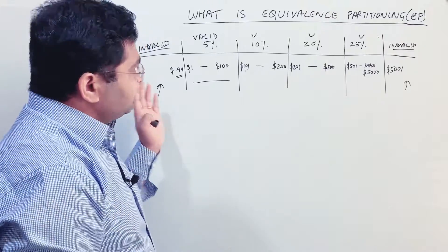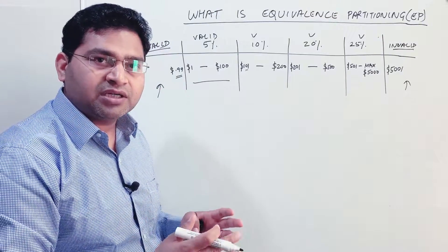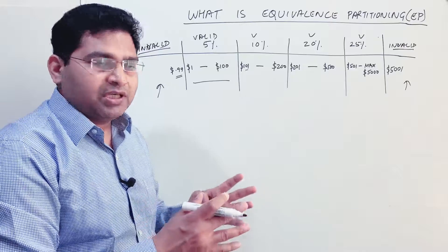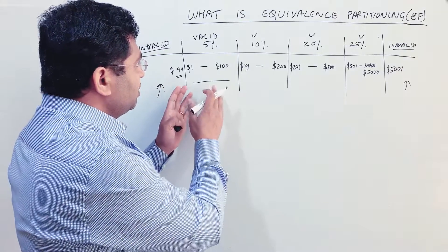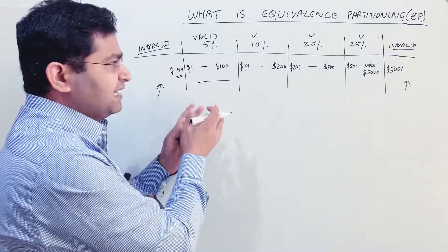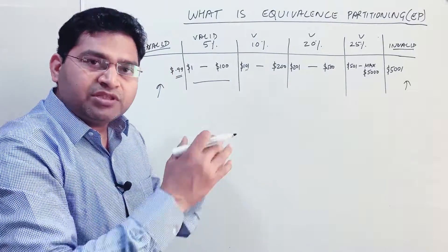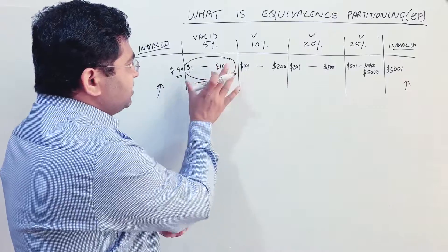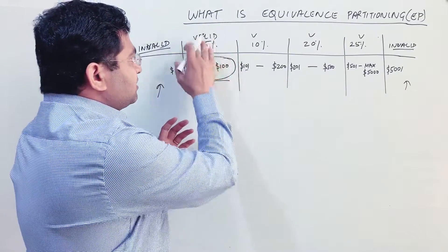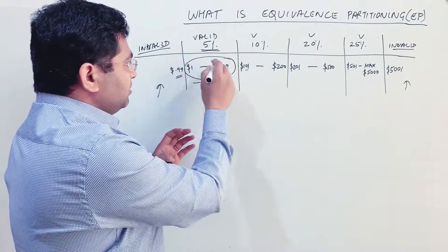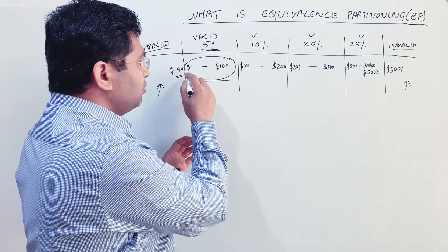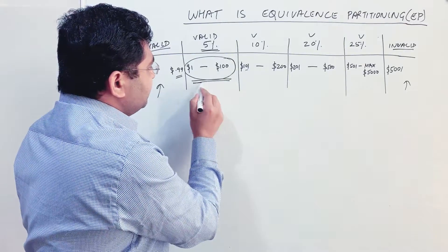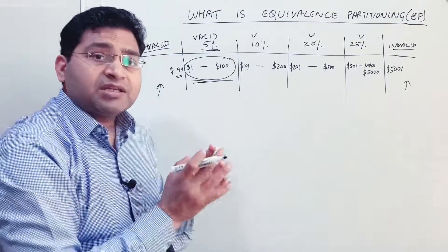This is what equivalence partitioning is — you divide the module of the software into behaviors that are logically equal in certain scenarios, creating valid and invalid partitions. Within those partitions, it doesn't matter what value you put; if it's within the range the output should be the same. From $1 to $100, any value should still yield a 5% discount. This is the logical partitioning we do in software testing to minimize the number of test cases.